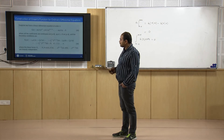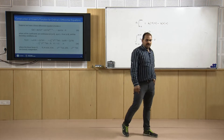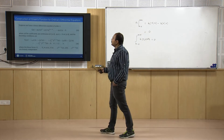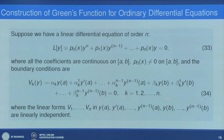Now let us generalize the concept of constructing the Green function to a general nth order linear differential equation. Consider L y = p₀(x)yⁿ + p₁(x)y^{n-1} + … + pₙ(x)y, where all coefficients p₀ through pₙ are continuous on the closed interval [a, b], and p₀(x) is non-zero on [a, b]. The boundary conditions are general mixed boundary conditions Vₖy = 0 for k = 1 to n.